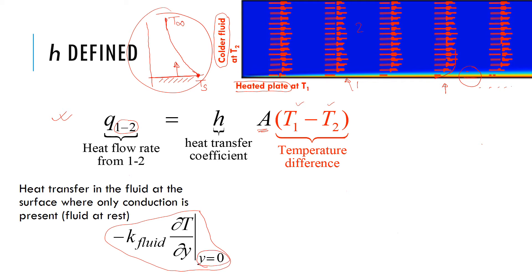It's because the velocity at this point, so this is y equal to 0, y being measured this way. So at this point, the velocity is 0.